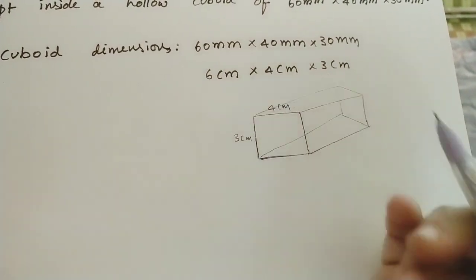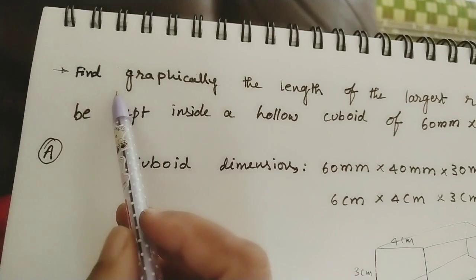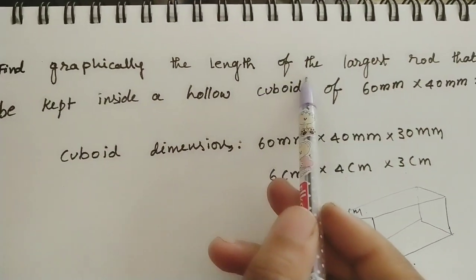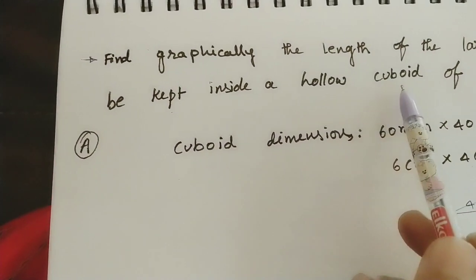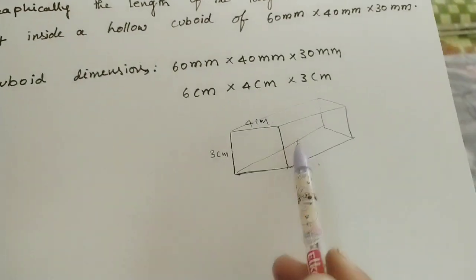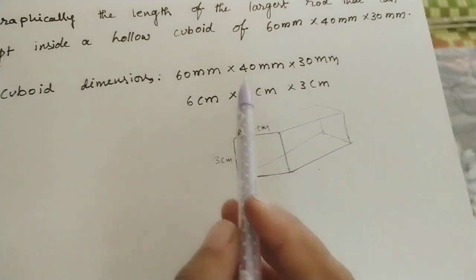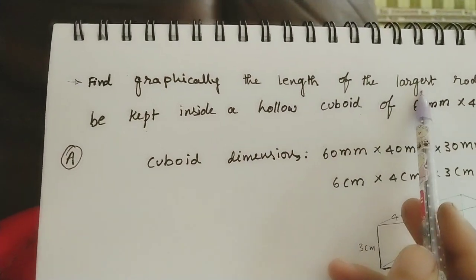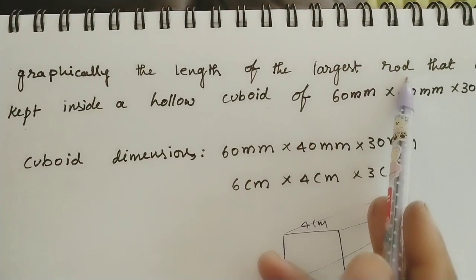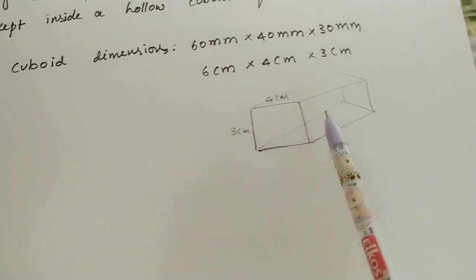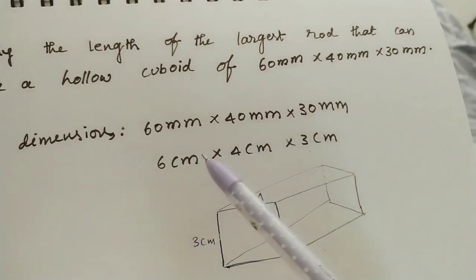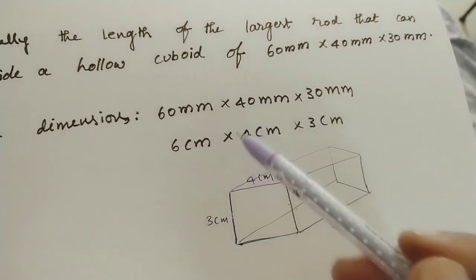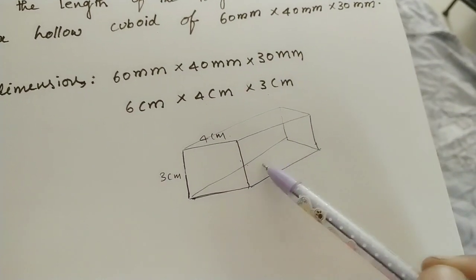In the exam paper you can also do a rough diagram. Find graphically the length of the largest rod that can be kept inside a hollow cuboid. We need to find the largest length of the rod inside the cuboid. The length has not been given — only the suggestion of the largest rod is given, so we have to fit that rod inside the box.